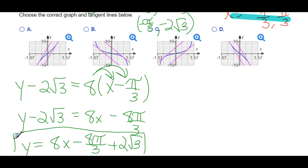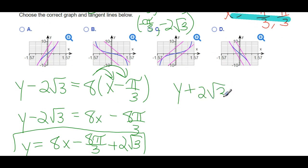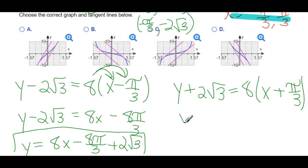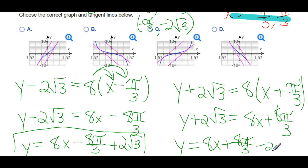For the other line, we start with y − (−2√3) = 8·(x − (−π/3)), so y + 2√3 = 8x + 8π/3. Subtracting 2√3: y = 8x + 8π/3 − 2√3. So other than the 8x term, all the other signs change. There are our two lines — they're parallel to the original line y = 8x.